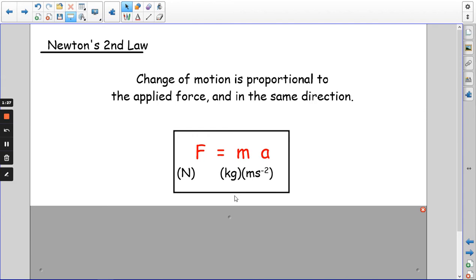You need this in your notes: F equals ma. You should have done a bit of this at GCSE, so it's not brand new. It has to be in SI units, so be careful because sometimes they muck around with the units to catch you out. Force is in newtons, mass is in kilograms, and acceleration is in meters per second squared, ms to the power minus two.